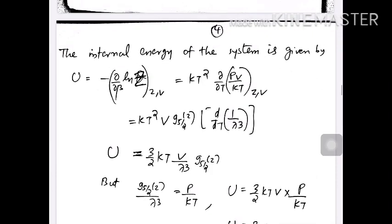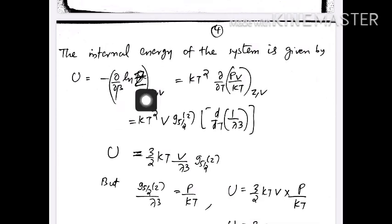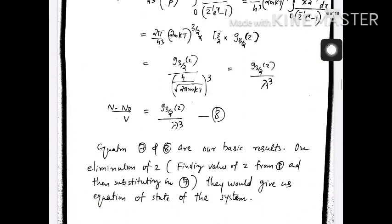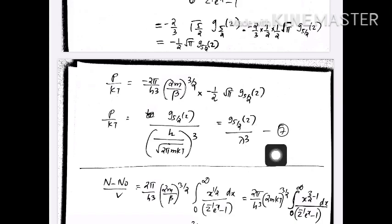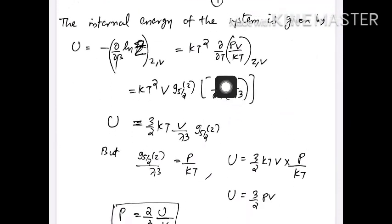Before that, let us find the internal energy of the system. The internal energy is the mean energy of the system, equal to PV/kT minus d/d_beta of log of the grand partition function. The log of the grand partition function is the q-potential, which equals PV/kT. So PV/kT, from equation 7, gives PV/kT equal to V times g_phi(z) over lambda^3.